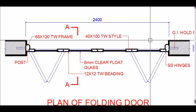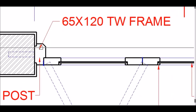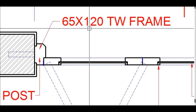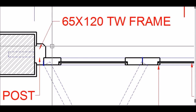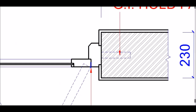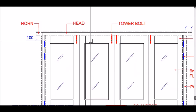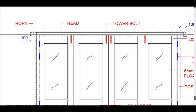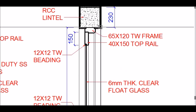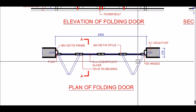This door has basically two components: the frame and the door shutters. Looking at the plan, the frame is made out of a 65 by 120mm thick wood section. It consists of vertical members called posts — one post on each side — and a horizontal member at the top called the head. So the frame consists of two posts and one head.